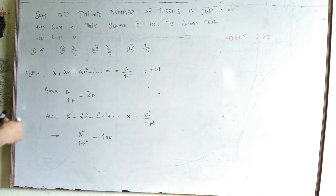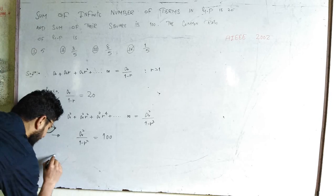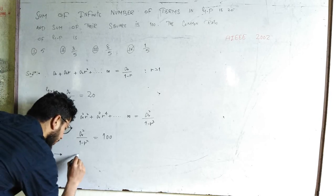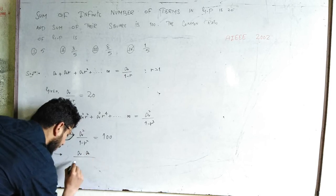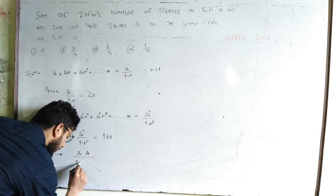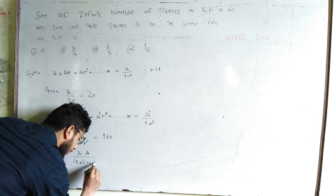We can simplify this to get the common ratio. We can write a² and factor 1-r² as (1-r)(1+r).